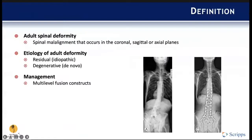So first of all, just to define adult spinal deformity before we go into proximal junctional kyphosis. Spinal malalignment that occurs in the coronal, sagittal, or axial planes. Etiology usually falls into two main buckets, either residual/idiopathic or degenerative in nature. And then how we address adult spinal deformity surgically is with typically multi-level fusion constructs with or without osteotomies.